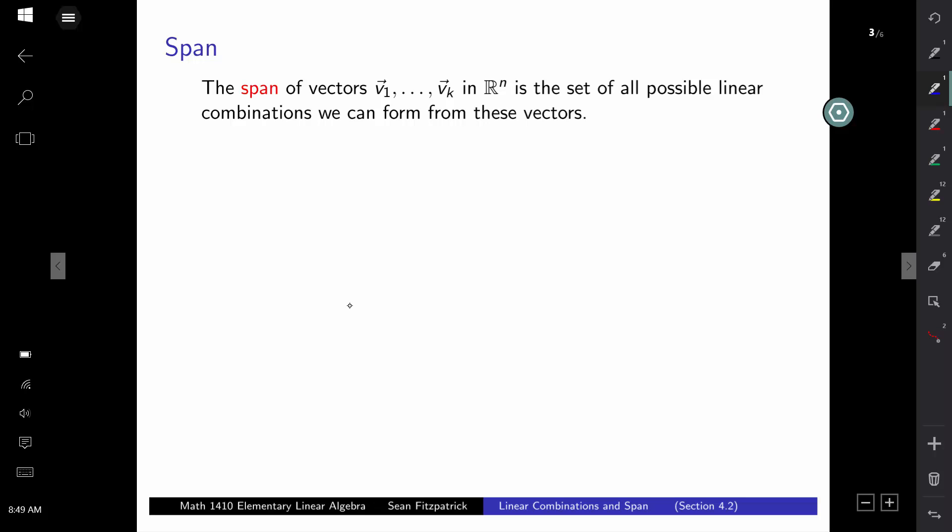So the span, the notation we'd use is this. The span of the set of vectors, say, V1 up to Vk, would be equal to the set of all vectors of the form c1 times V1 plus c2 times V2 and so on, down to ck times Vk, where c1, c2, ck are real numbers. So it's all possible vectors V that you can create by forming linear combinations of the vectors V1, V2 up to Vk. And so this is what a span is.